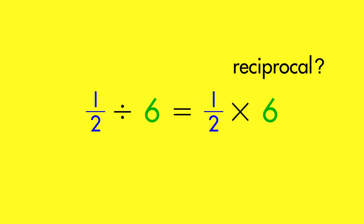But what is the reciprocal of a whole number? Remember that a whole number is the same as that number over 1. From here, just flip the fraction to get the reciprocal. This trick works because multiplication and division are inverse operations.